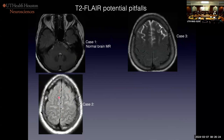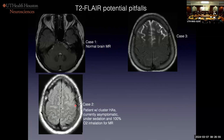Case two — this is a little bit subtle T2 FLAIR. Remember, we should have good CSF suppression in our sulci. In this particular case, look in the sulci — there's high signal there. That's very abnormal. A radiologist might say: does the patient have meningitis? Is there subarachnoid hemorrhage? In this case, the patient was normal but was under sedation with 100% inhaled oxygen. Oxygen is weakly paramagnetic, and at FiO2 levels of 100%, you can get increased oxygen in the CSF, which can shift the T1 recovery curve of CSF to the left, thus no longer nulling it.